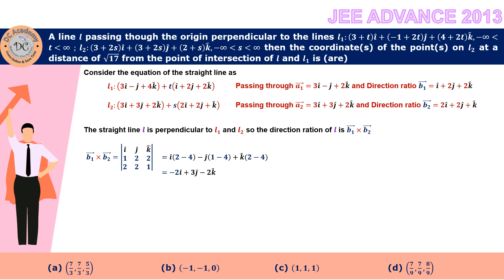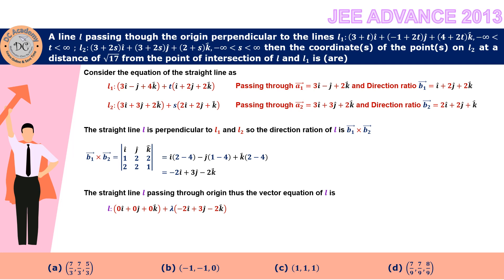Since line L passes through the origin, the vector equation of L is R = λ(−2i + 3j − 2k), where the position vector A is 0i + 0j + 0k, simplifying to just λ times that direction vector.